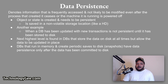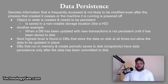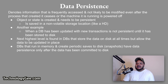Data persistence: persistent data denotes information that is infrequently accessed and not likely to be modified, even after the process that created it ceases or the machine is powered off. When an object or state is created and needs to be persistent, it is saved in a non-volatile storage location like a hard drive, versus temporary volatile RAM. A database updated with new transactions is not persistent until it has been stored to disk. Databases that run in memory and create periodic saves to disk, known as snapshots, have data persistence only after the data has been committed to disk.